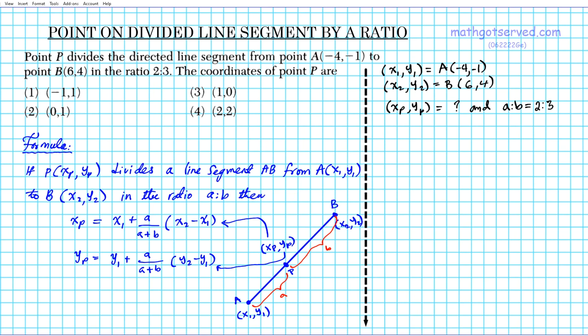So using this information, we know that X1 is -4, X2 is 6, A is 2, Y sub 1 is -1, Y2 is 4, and B is 3. So we have everything that we need to plug into this formula.